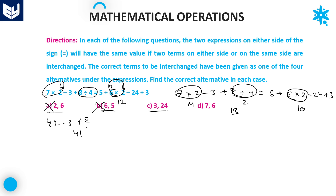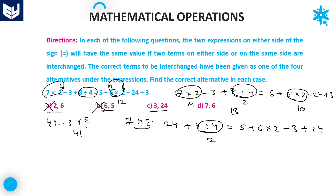Option C: 3 and 24 are interchanged. The equation becomes 7 into 2 minus 24 plus 8 divided by 4 equals 5 plus 6 into 2 minus 3 plus 24. First priority is division: left side gives 14 minus 10 minus 10 plus 2 equals minus 8. Right hand side: 12 plus 24 gives a positive value. Since left hand side is negative and right hand side is positive, eliminate option C. So option D — interchanging 7 and 6 — is the right answer.